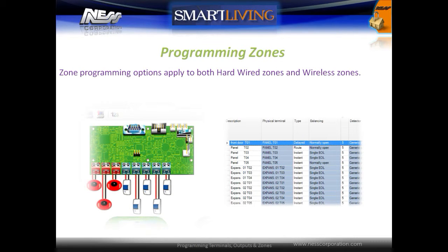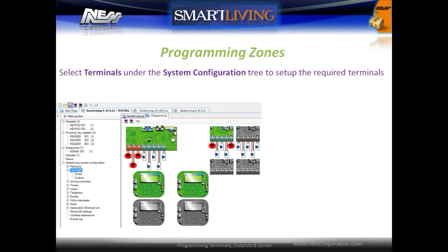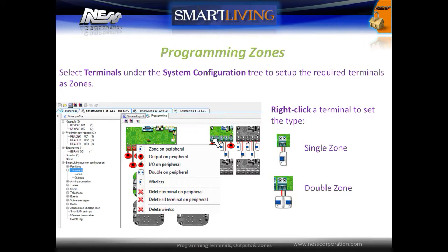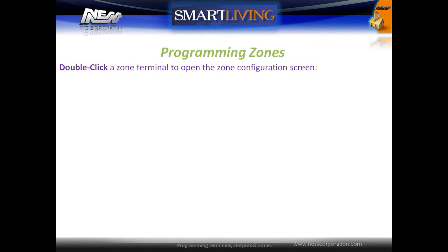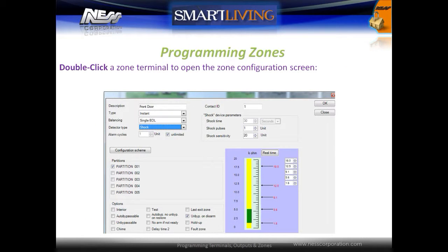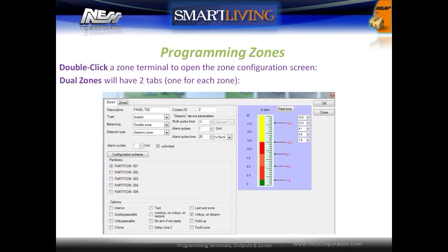Zone programming options apply to both hardwired and wireless zones. Select Terminals under the System Configuration tree to set up the required terminals as zones. Right-click a terminal to set it as a single zone or a double zone. Double-click a zone terminal to open the zone configuration screen. Dual zones will have two tabs, one for each zone.